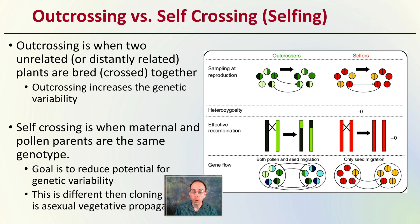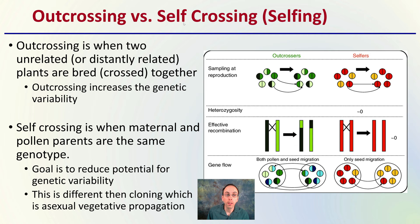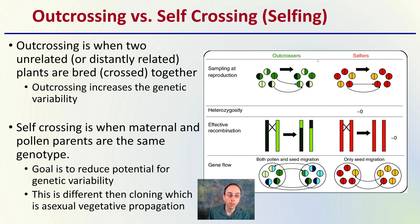First, we'll define what outcrossing and self-crossing are — sometimes self-crossing is simply referred to as selfing. An outcross is when two unrelated or at least distantly related plants are bred or crossed together, which increases the genetic variability. Self-crossing is when the maternal and pollen from the parents are the same genotype, with the goal to reduce genetic variability. This is different from cloning, which is an asexual form of vegetative propagation — selfing reduces genetic variability, whereas cloning produces an almost identical copy.